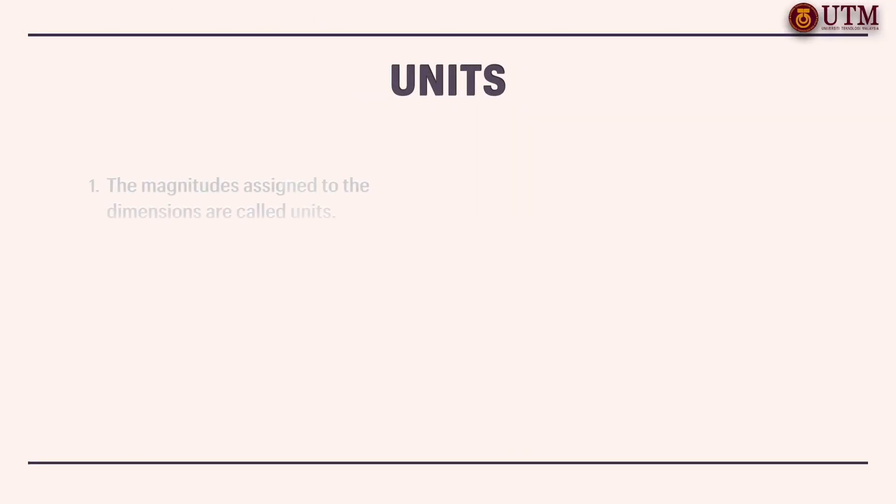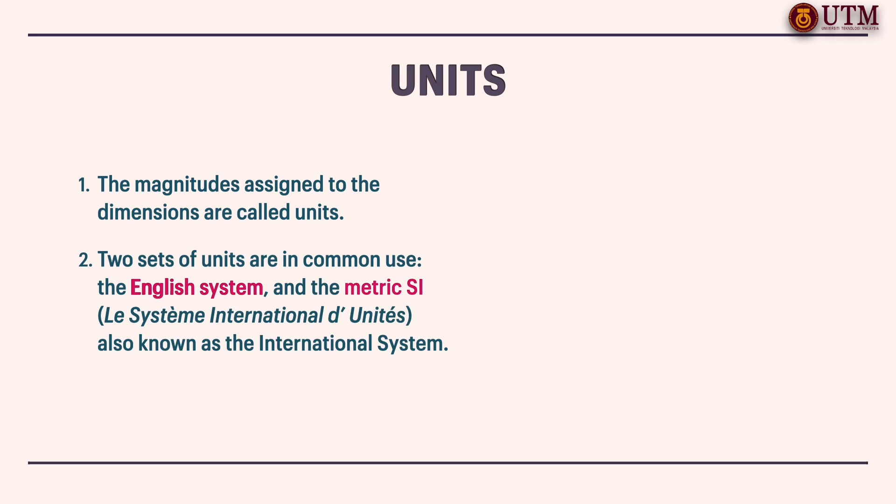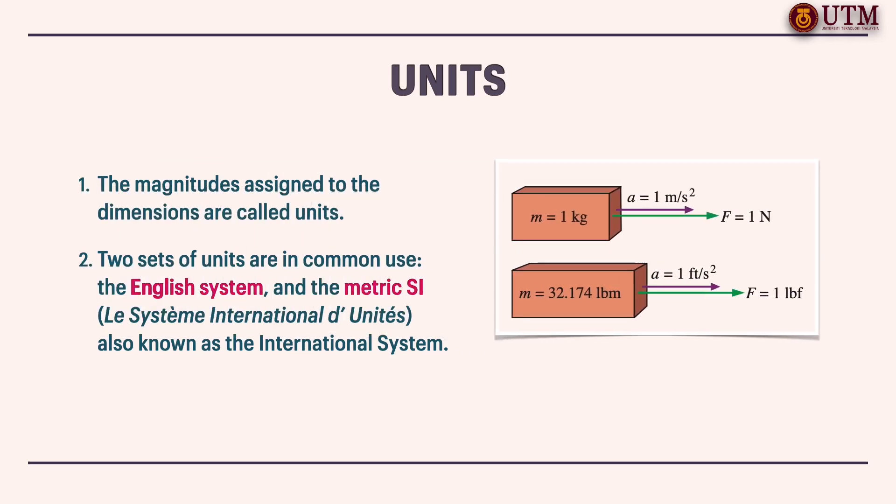Units are defined as the magnitudes assigned to the dimensions. Two sets of units are still in everyday use today, the English system and the metric SI, also known as the International System. The difference between the two unit systems can be demonstrated in these two phenomena. Both systems have the same value of 1 respectively.